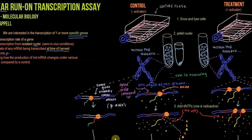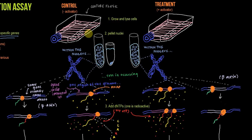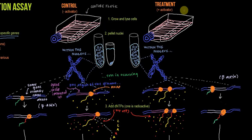I'm going to go pretty in depth — I had a lot of fun drawing these diagrams about how this works. The treatment we're going to use is adding an activator, which we would expect to increase the level of transcription of a particular gene. So we've got our control where we don't have the activator, and we have our treatment with the activator added. The first thing we do is grow the cells and then lyse them. Here are our cells growing in two different culture flasks — one without the activator, and one with the activator added. After the cells grow, we'll lyse them and then pellet the nuclei in a test tube, so we have nuclei isolated in here.